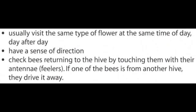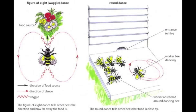Watching honeybees shows us that individual bees usually visit the same type of flower at the same time of day, day after day. Bees have a sense of direction. They check bees returning to the hive by touching them with their antennae — if one of the bees is from another hive, they will drive it away.